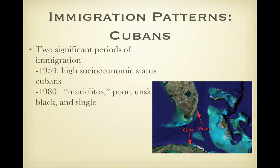Cubans. There were two significant periods of immigration. It began in the 19th century; there was 1959, mostly upper-class Cubans immigrating, and then in the 1980s, mostly poor unskilled laborers immigrating. In the 1980s they were given the name Marilitos, and that came from the term Mariel Boatlift, which described how they arrived in Florida via private boats.